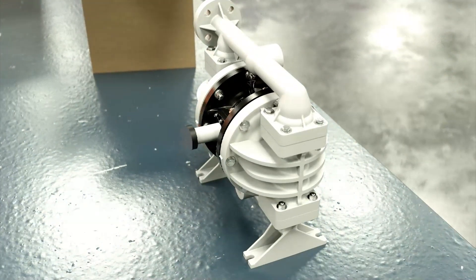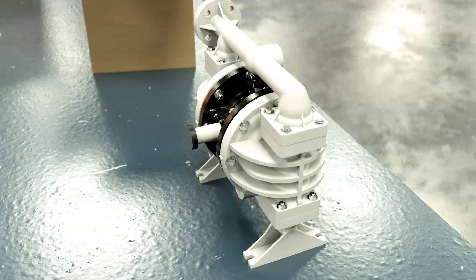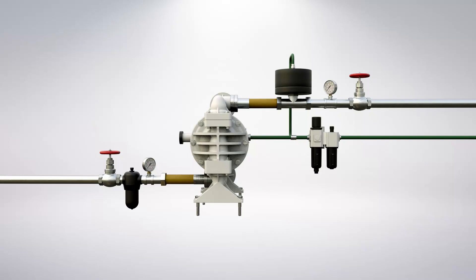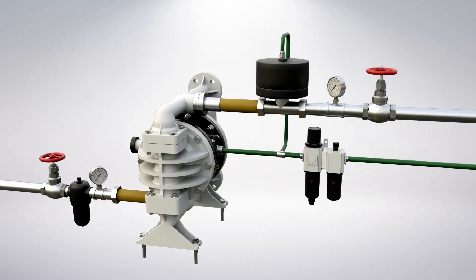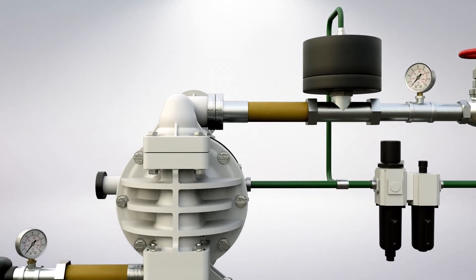Next, install the muffler, which must be installed to reduce sound levels. Install the pump in an accessible location to facilitate future maintenance. When possible, it's best to install the pump using the shortest pipe with the minimum number of pipe fittings.